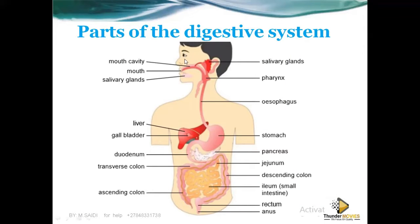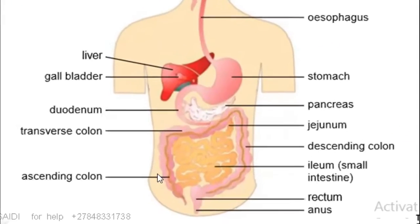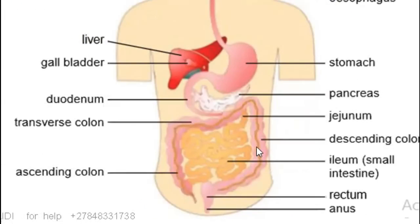The major parts you need to know are the mouth, the oesophagus, the stomach, the duodenum, the pancreas — which is an organ that produces enzymes — and then the colon. The colon is called the large intestine, which is divided into three parts. The jejunum is part of the large intestine, and the colon is just part of the large intestine.